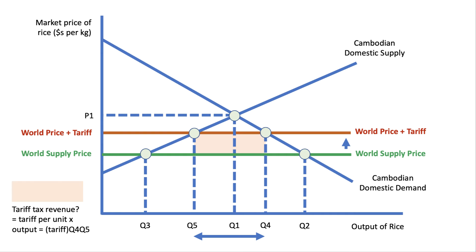The tariff revenue that the Cambodian government gets — don't forget many developing nations levy tariffs as a way of raising extra revenue for the government. The revenue is the tax per unit, which is the vertical distance between the green and the brown line, multiplied by the volume of imports. So it's the tariff multiplied by Q5-Q4. That orange shaded area is the tariff revenue.